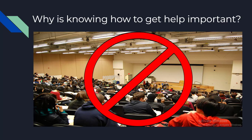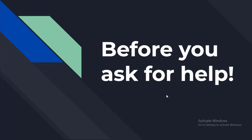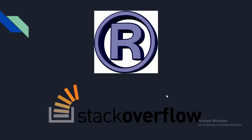Troubleshooting and figuring out solutions is a great transferable skill that will serve you well not just as a data scientist but in whatever career path you find yourself in. Before you ask for help, there are a few steps you can take on your own. One of your first stops for data analysis problems should be reading the manuals or help files — for R problems, try typing a question mark followed by the command. Searching on Google and searching relevant forums like Stack Overflow and Cross Validated are also key steps.